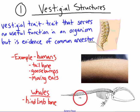Vestigial structures are the final part of number one, and this is one of the biggest pieces of evidence for evolution that evolutionary biologists like to point to. Vestigial traits and structures are traits that serve no useful function in an organism but are evidence of a common ancestor. These traits are completely useless in modern-day species, so the question is: why do we have them? The answer is that our common ancestor — the species that came before us — had these traits.